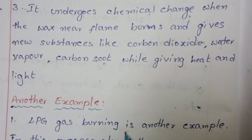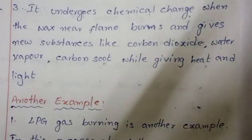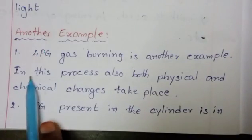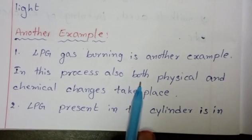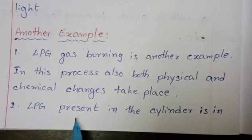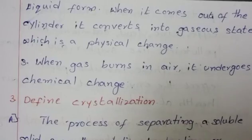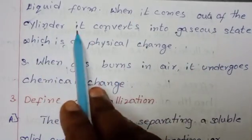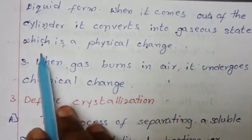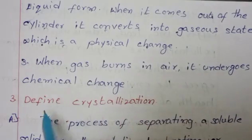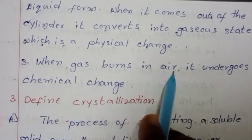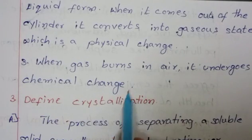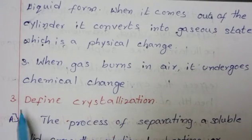Another example is LPG gas burning. In this process, both physical and chemical changes take place. LPG present in the cylinder is in liquid form. When it comes out of the cylinder, it converts into a gaseous state, which is a physical change. When the gas burns, it undergoes a chemical change.